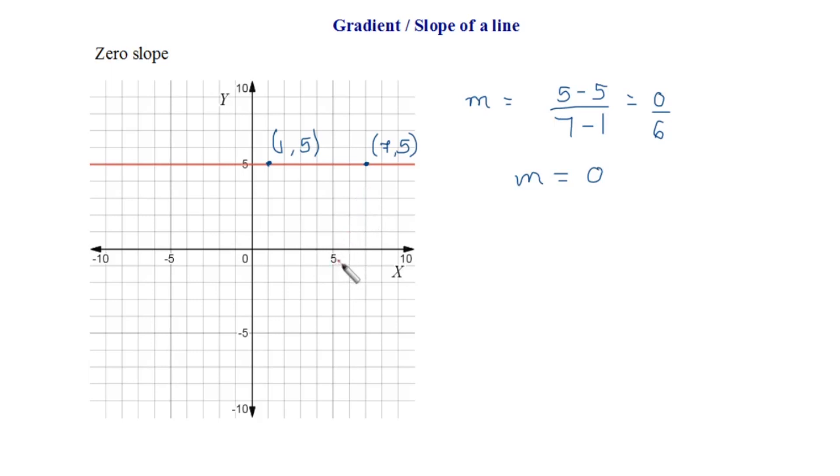If there is no vertical change which means the numerator would be 0, and hence for any horizontal line the slope is 0 or you can say the gradient is 0.